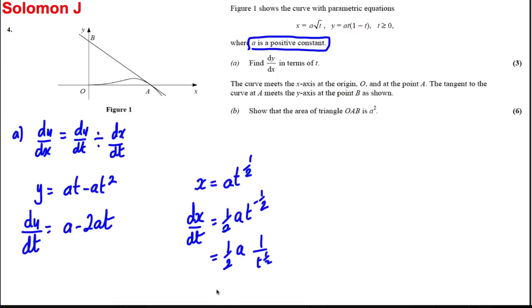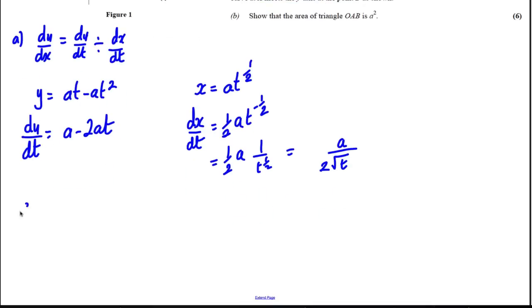I can write that as (1/2)a(1/√t) or (1/(2√t)), which I can simplify as a/(2√t).